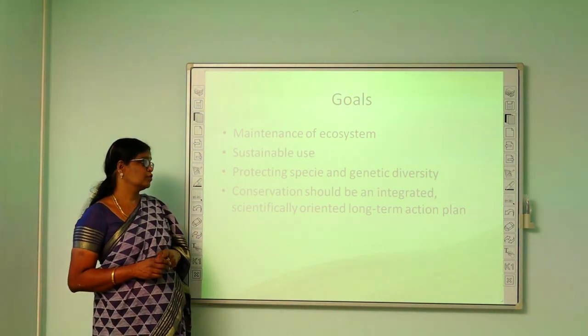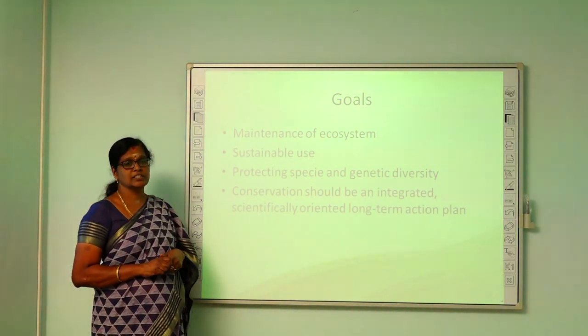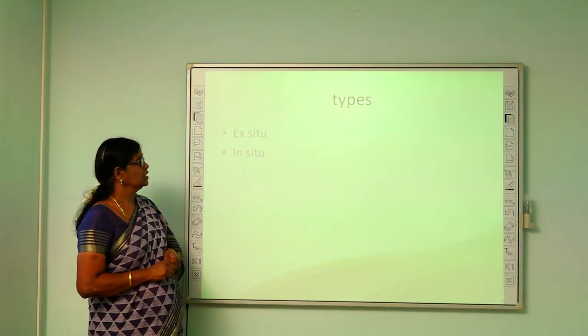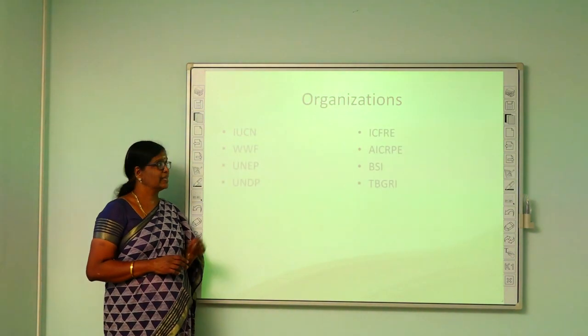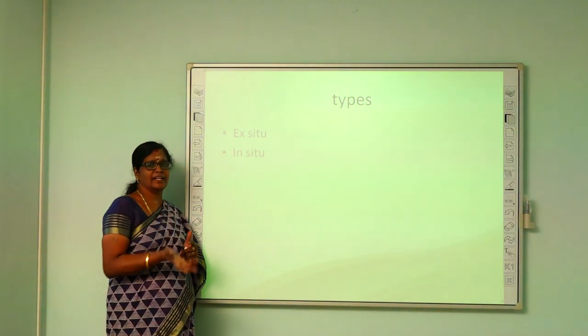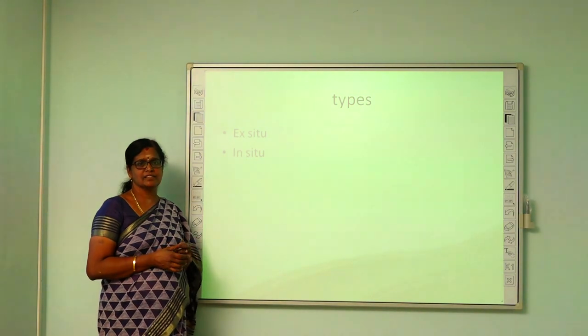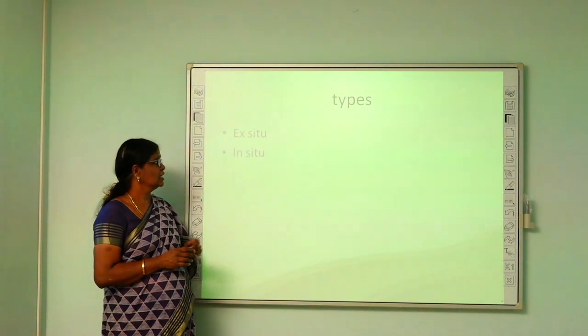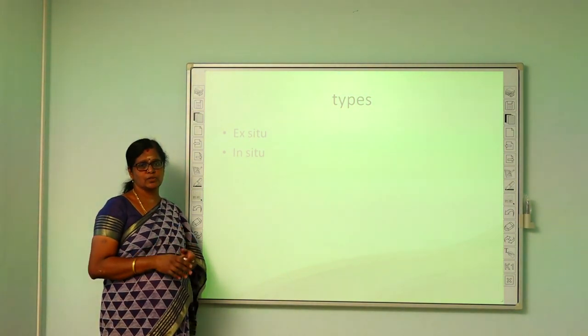Plant conservation programs should be integrated, scientifically oriented and long-term action plans. There are two types of plant conservation: ex-situ and in-situ. Ex-situ is conservation of plants other than their natural habitat like botanic gardens, gene banks, pollen banks, seed banks, etc. In-situ conservation is preserving and conserving them in their natural habitat.